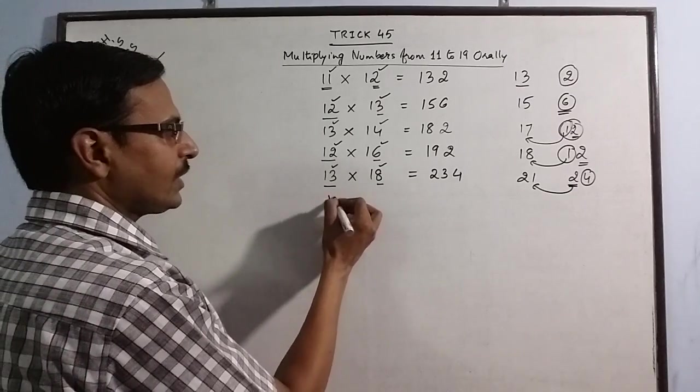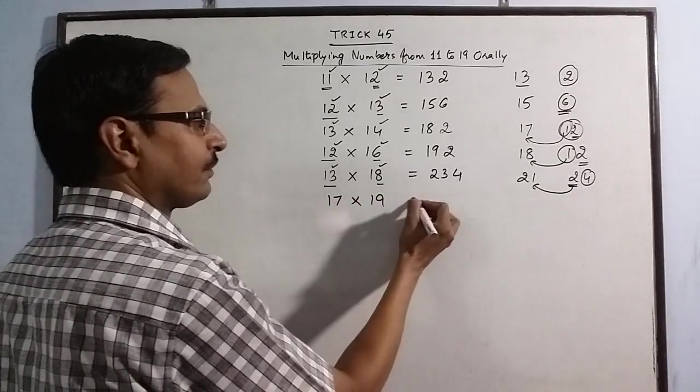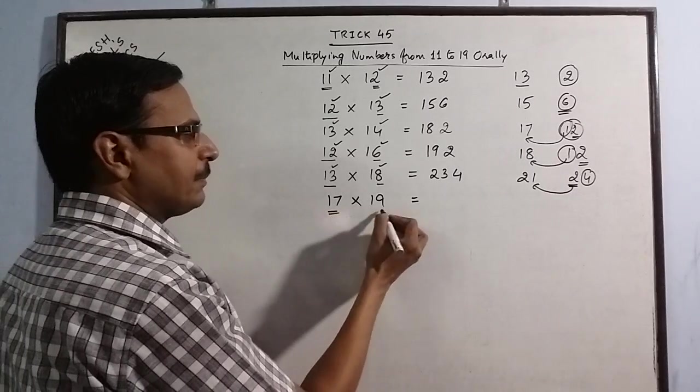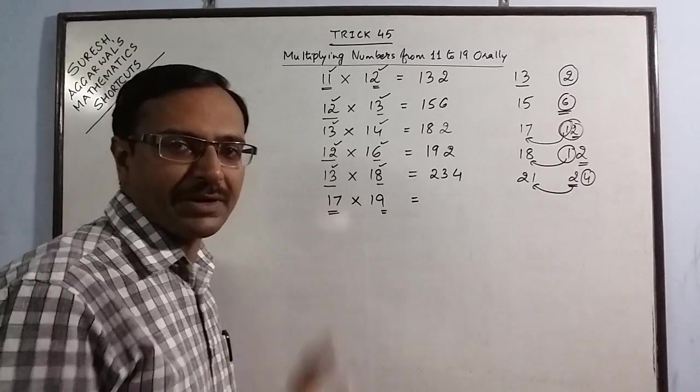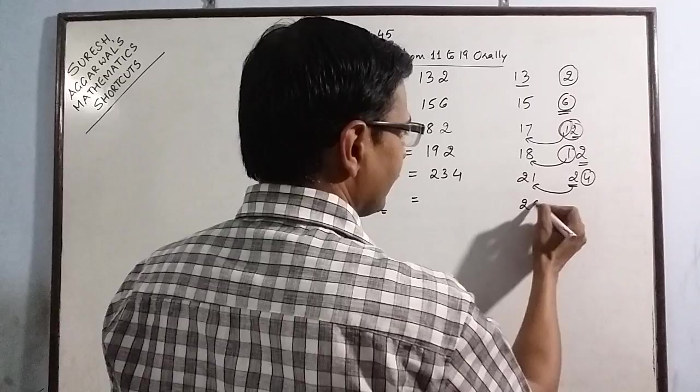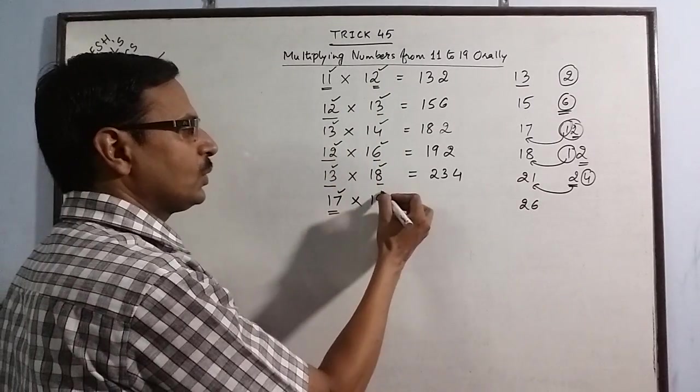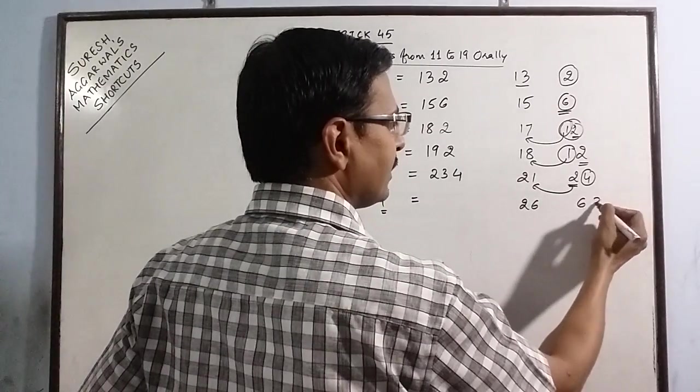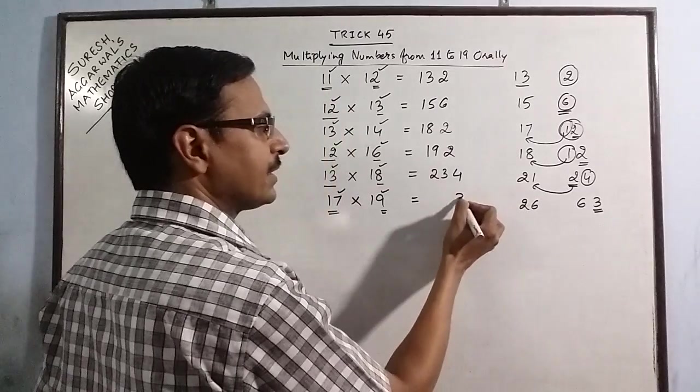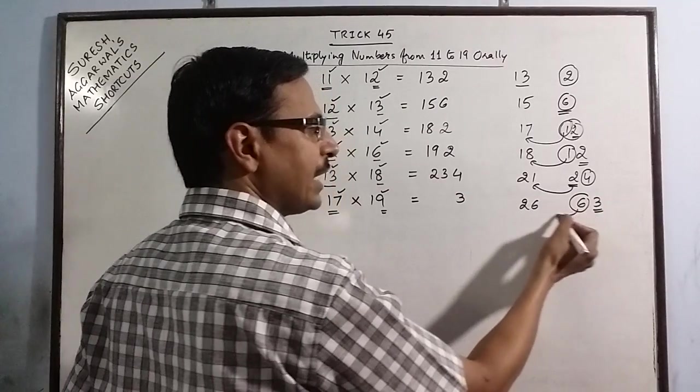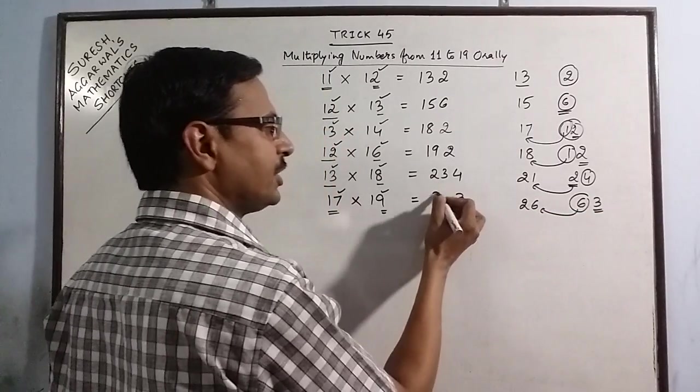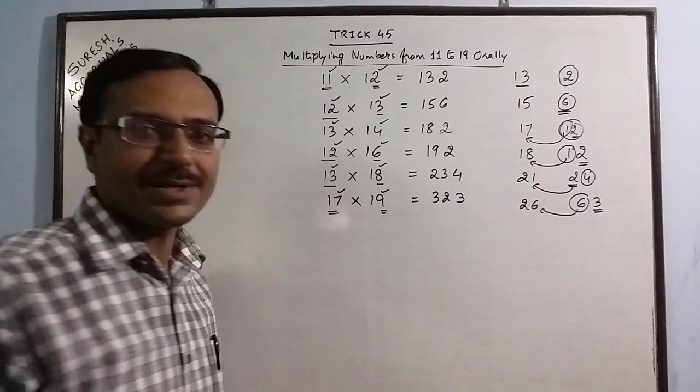17 into 19. You can have 17 plus 9, 17 plus 9 is 26. Now 7 into 9 is 63. Retain this 3 here and this number is to be added to this. 26 plus 6 is 32. So 323 is the product.